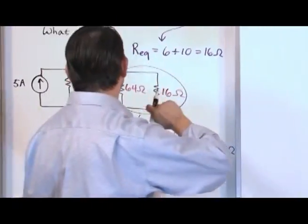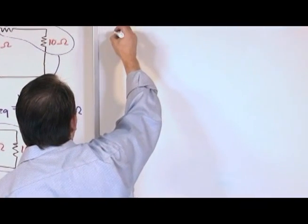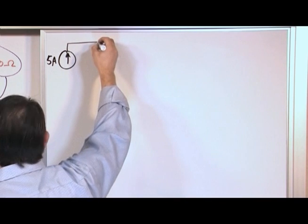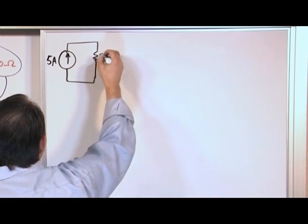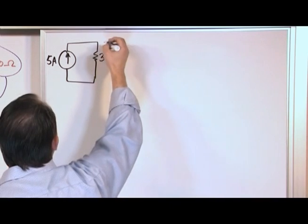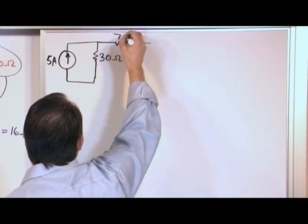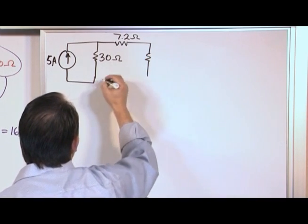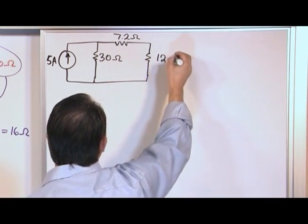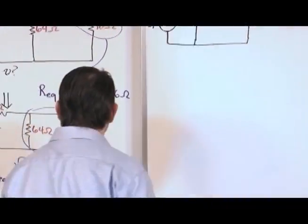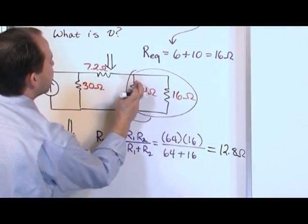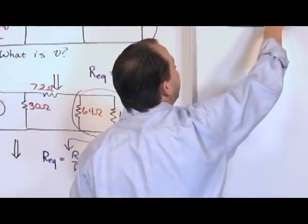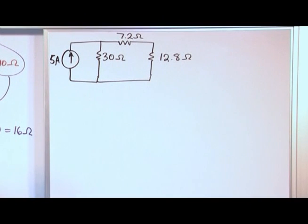So, we'll say, actually what we're going to do, let's redraw it over here just so we make sure and have room, so what we're going to have, we'll have the current source. We have the five amps going up here. Now, we have the 30 ohm resistor right here, so we'll write 30 ohms. We have still the 7.2 ohm resistor here, but then what we're left with here after we've done this simplification is 12.8 ohms. Make sure you understand that. Once we combine these guys, they kind of live in one single resistor, which is now coming down like this, right on the tail end of the 7.2 ohm resistor.